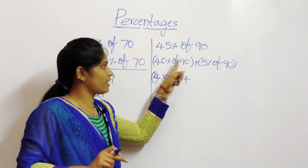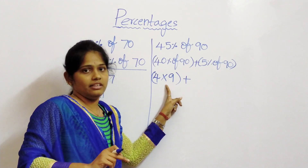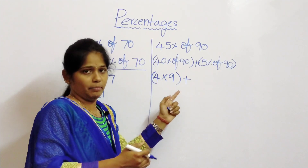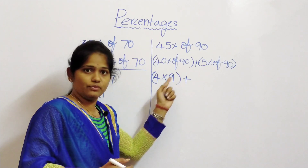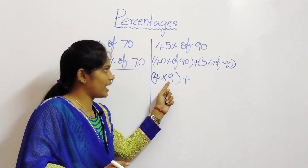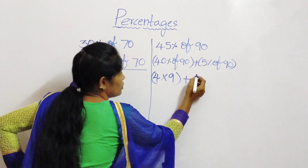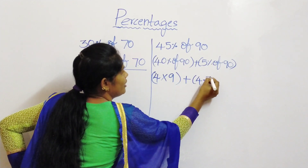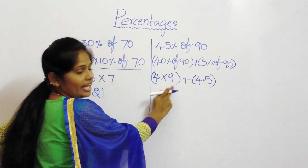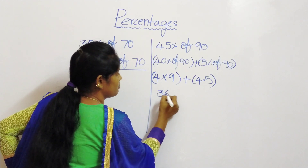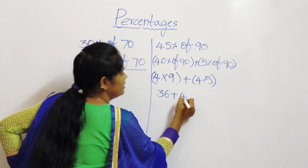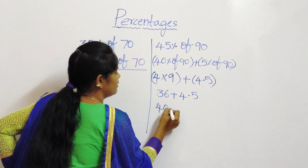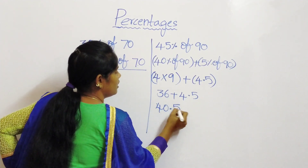Plus 5 percentage of 90. Here 10 percentage of 90 is 9, so half of it is 5 percentage. Half of 10 percentage is 5 percentage. So half of 9 is 4.5. So 5 percentage of 90 is 4.5. 4 nines are 36, plus 4.5. So the answer is 40.5.